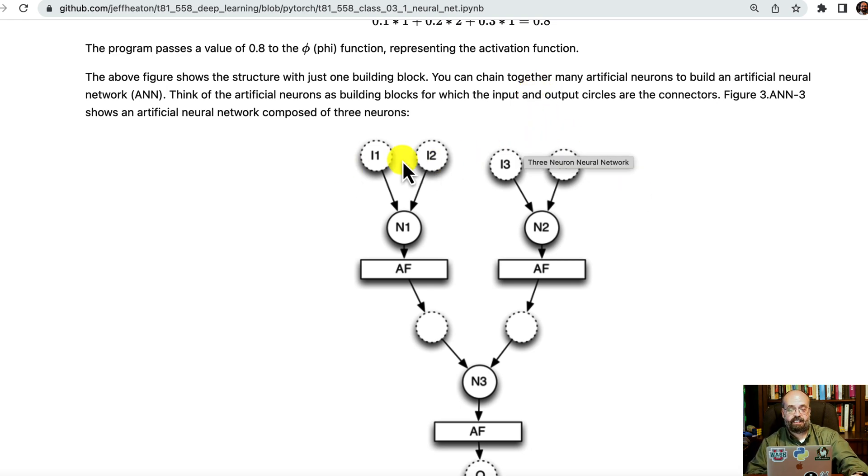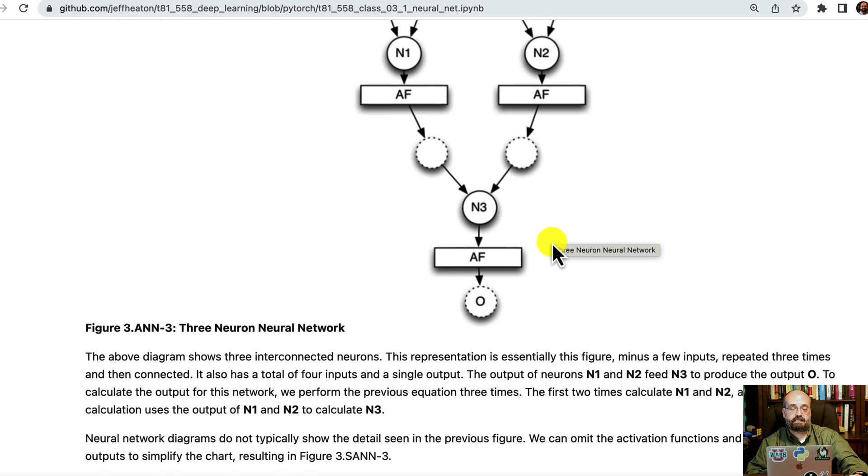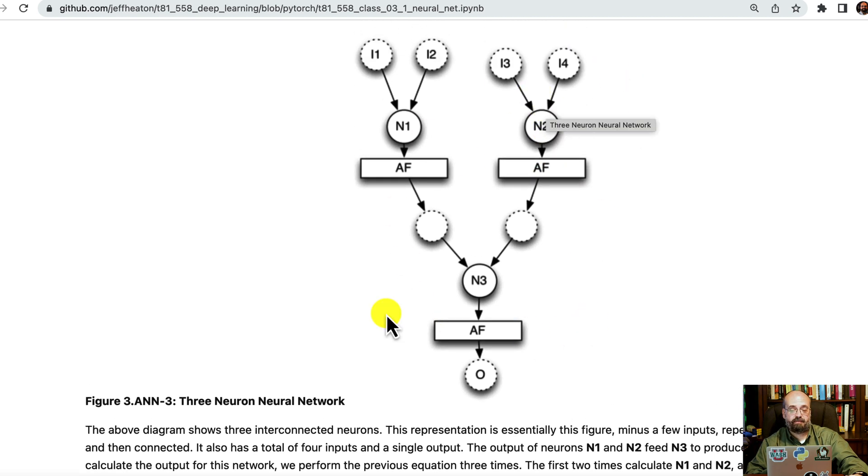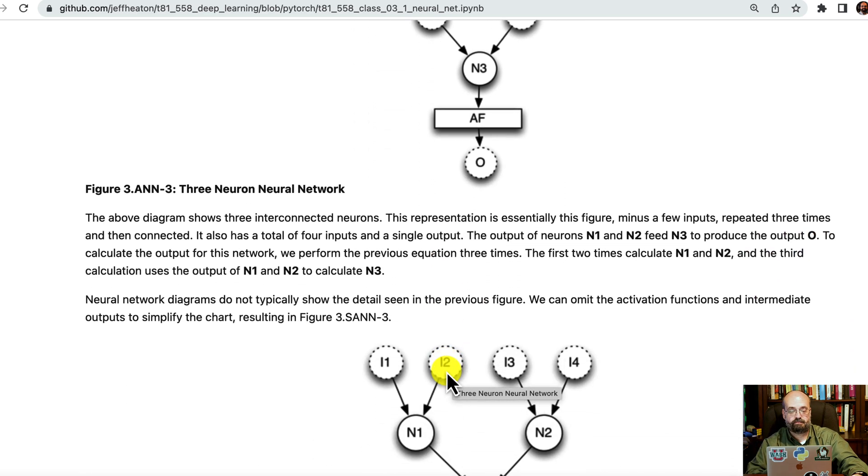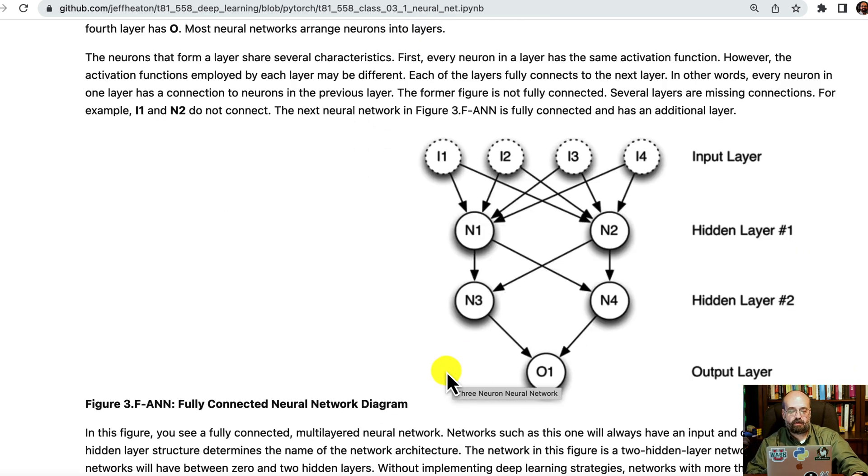Usually what you would see is input one, two, three and four would all connect into neuron one. And then input one, two, three, four would all connect into two. So you have one complete set of weights for each. This is a type of neural network that you will see sometimes set up to emulate functions like and or exclusive or.